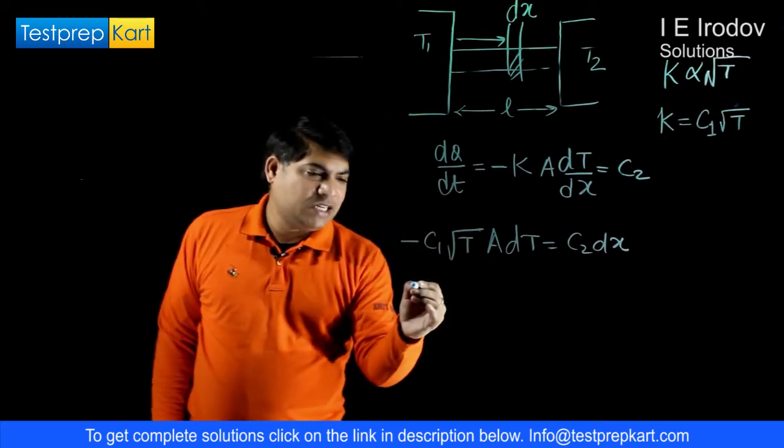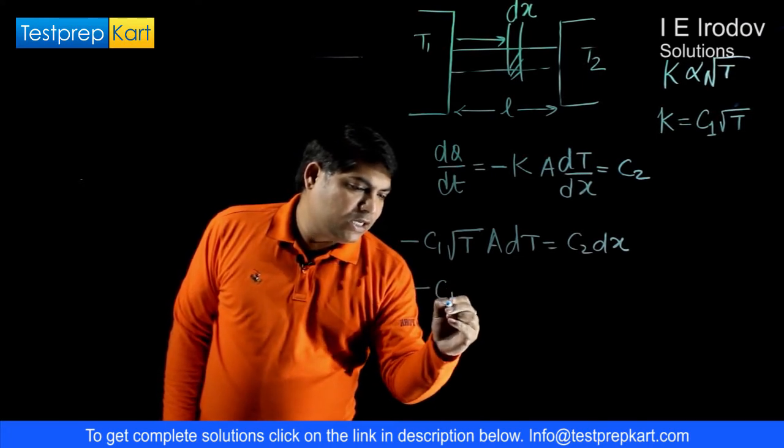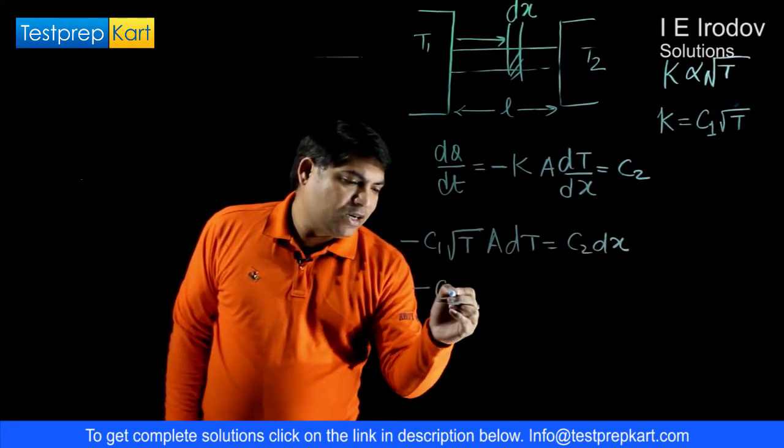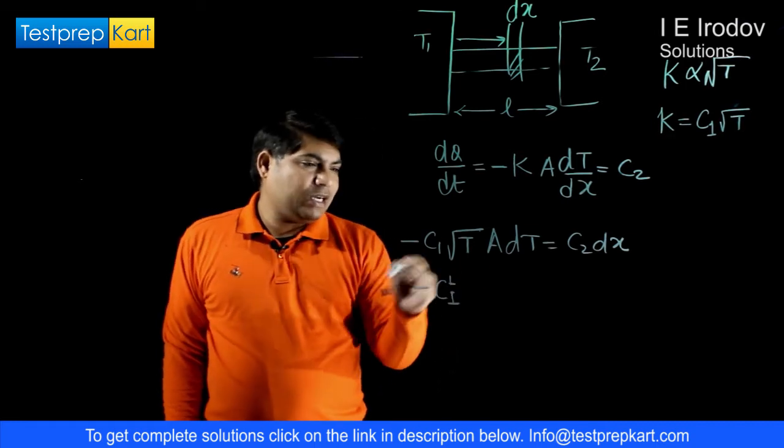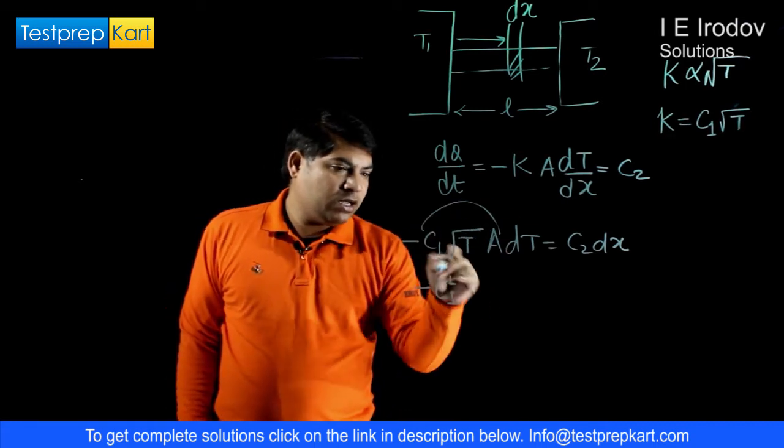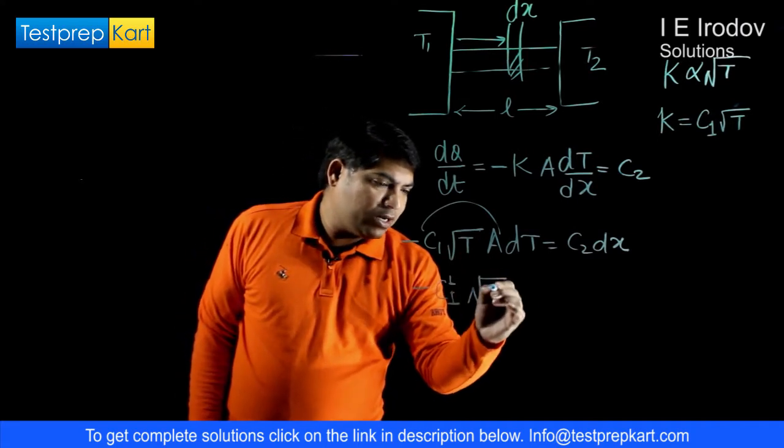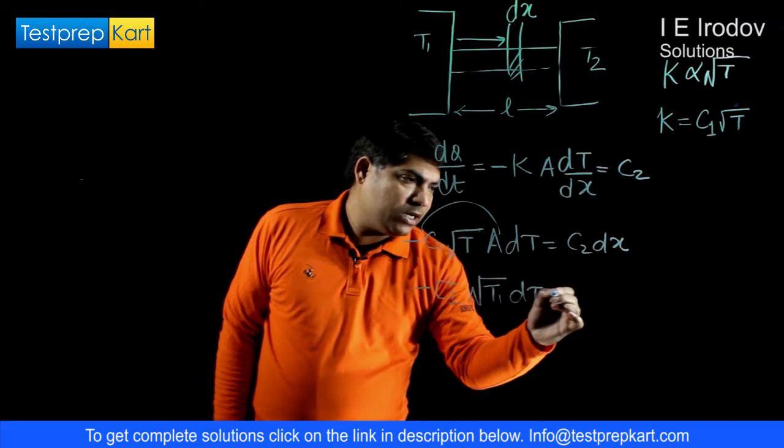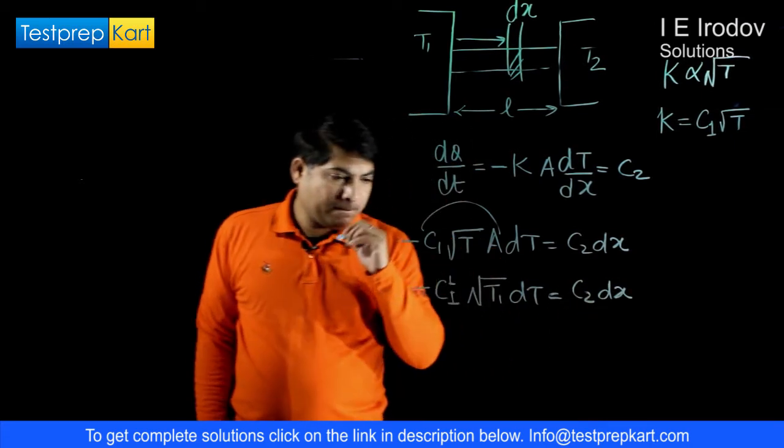Let us minimize as much as we can. I am taking it as a constant C1 dash. C1 dash means C1 into A. This is root T into dT is equals to C2 into dx.